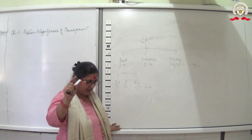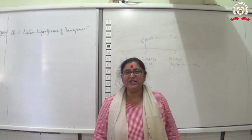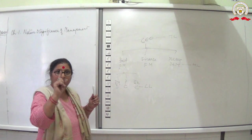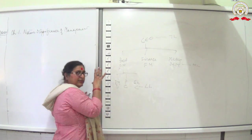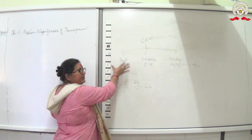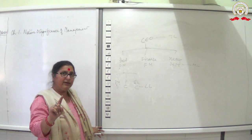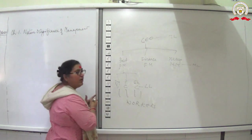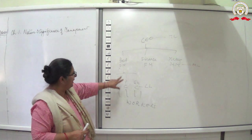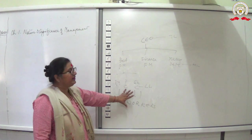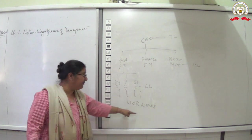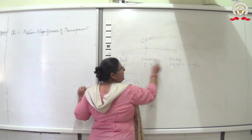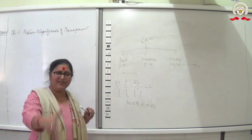Coordination is slightly different from cooperation. Cooperation is within the department — all workers putting their efforts together so the manager's goal is achieved. Coordination is the function performed in time and sequence between departments. That is the key difference between coordination and cooperation.